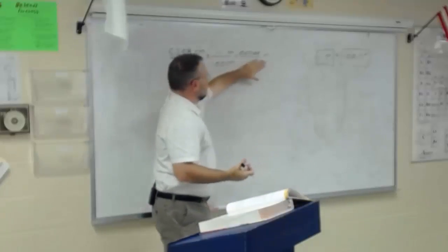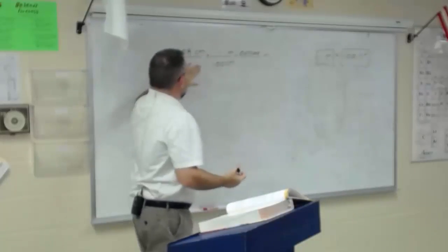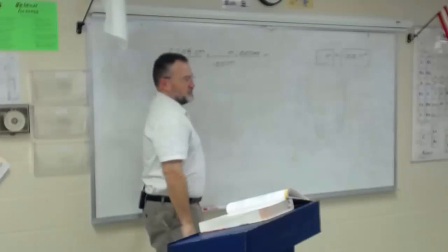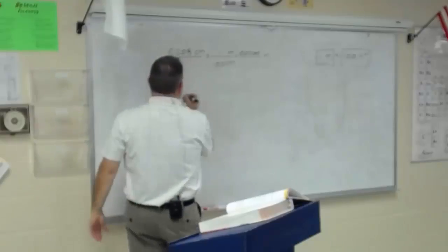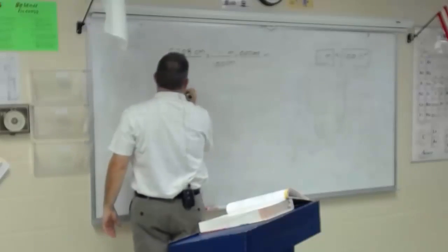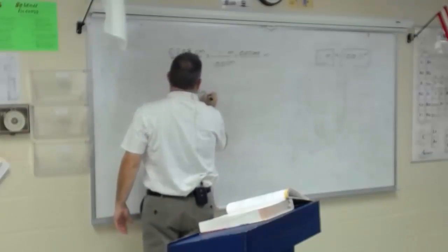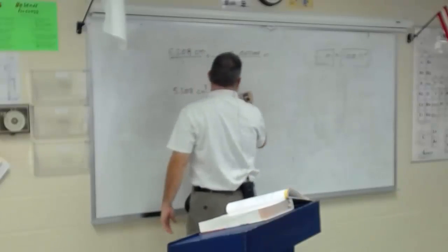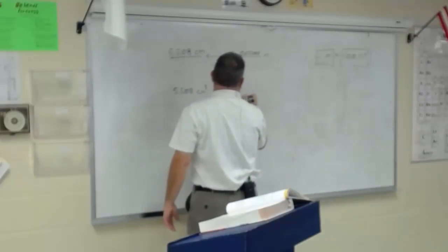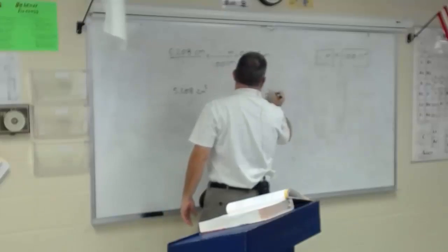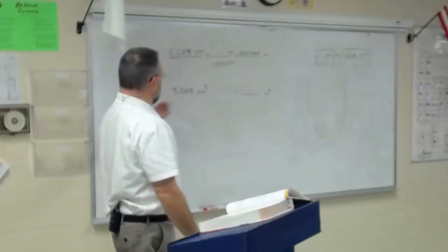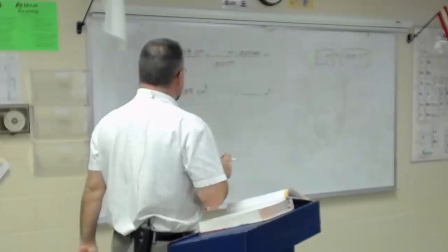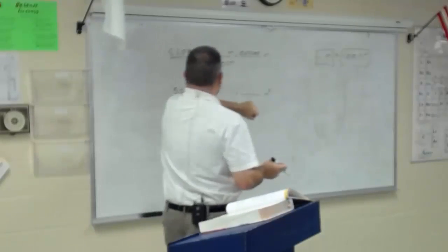To end up with units of meters from centimeters, I multiply by a conversion factor using one meter equals 100 centimeters. But the book gives the example of converting 5.208 centimeters cubed to a certain number of meters cubed. How do I convert from centimeters cubed to meters cubed?